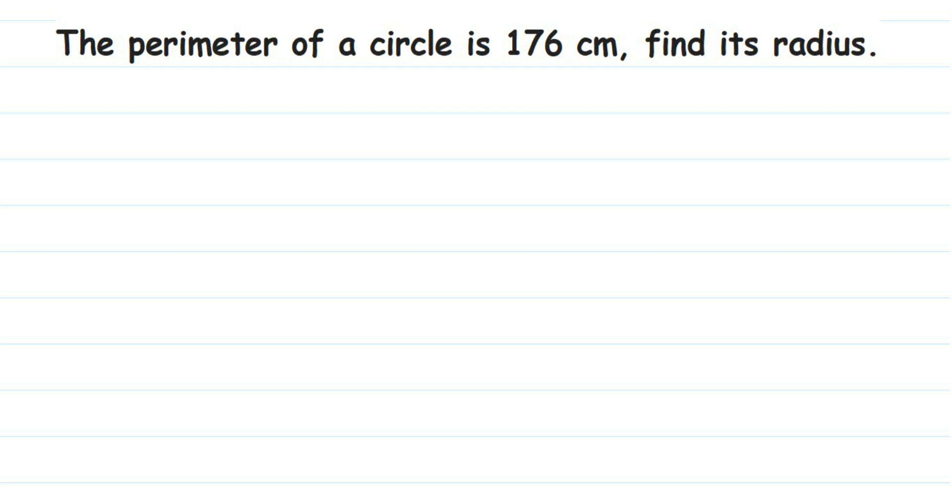Hello everyone, here is a question on circles. The question is: the perimeter of a circle is 176 centimeter, find its radius. So what is given? We have given perimeter of circle. Perimeter means circumference. We're going to use the circumference of circle formula. Remember, perimeter and circumference both are the same - that is nothing but the measurement of the boundary.